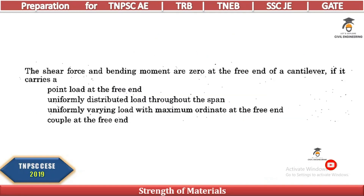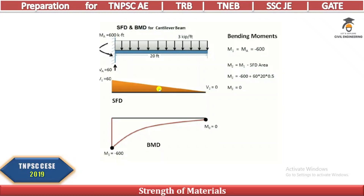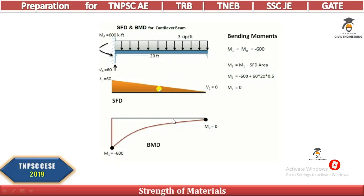The shear force and bending moment are zero at the free end of a cantilever if it carries what load? When a UDL acts on a cantilever beam, the bending moment and shear force at the free end are both zero.